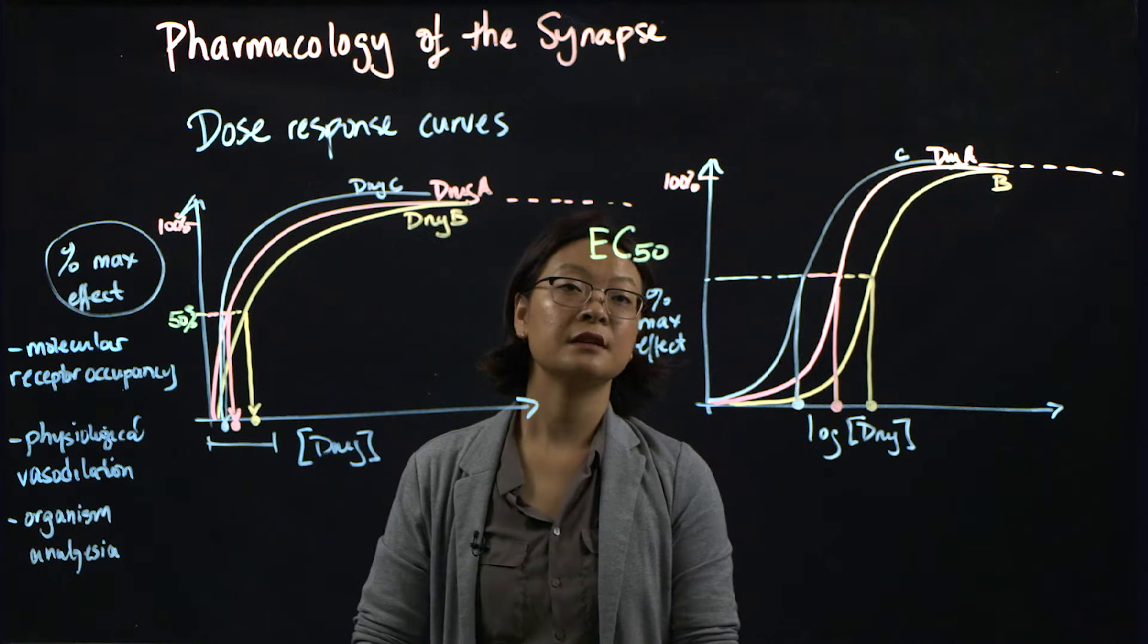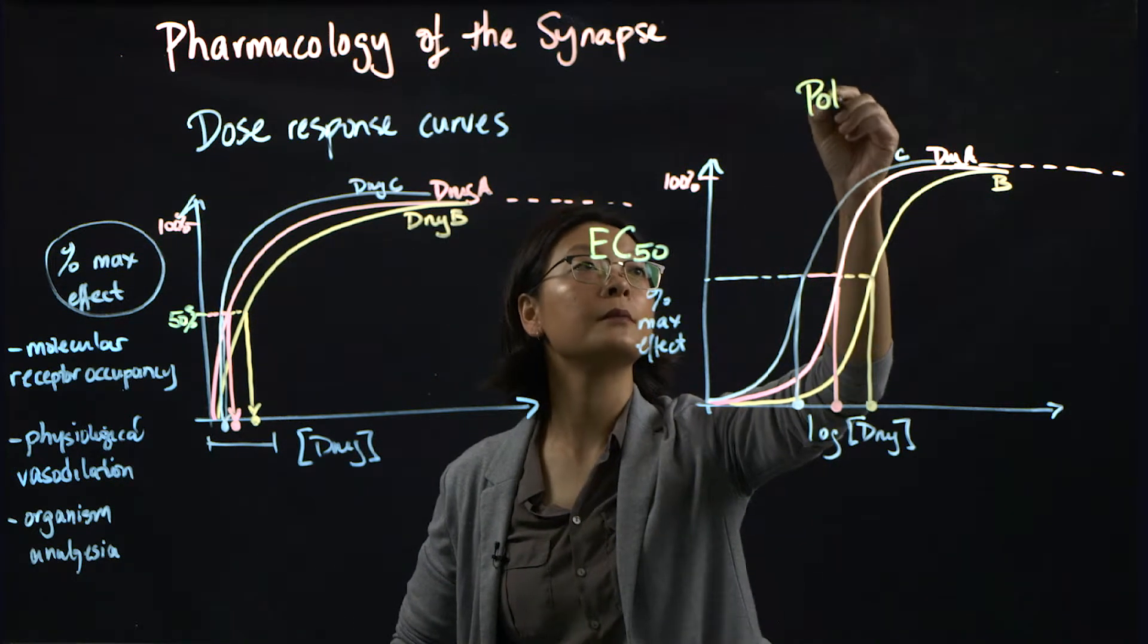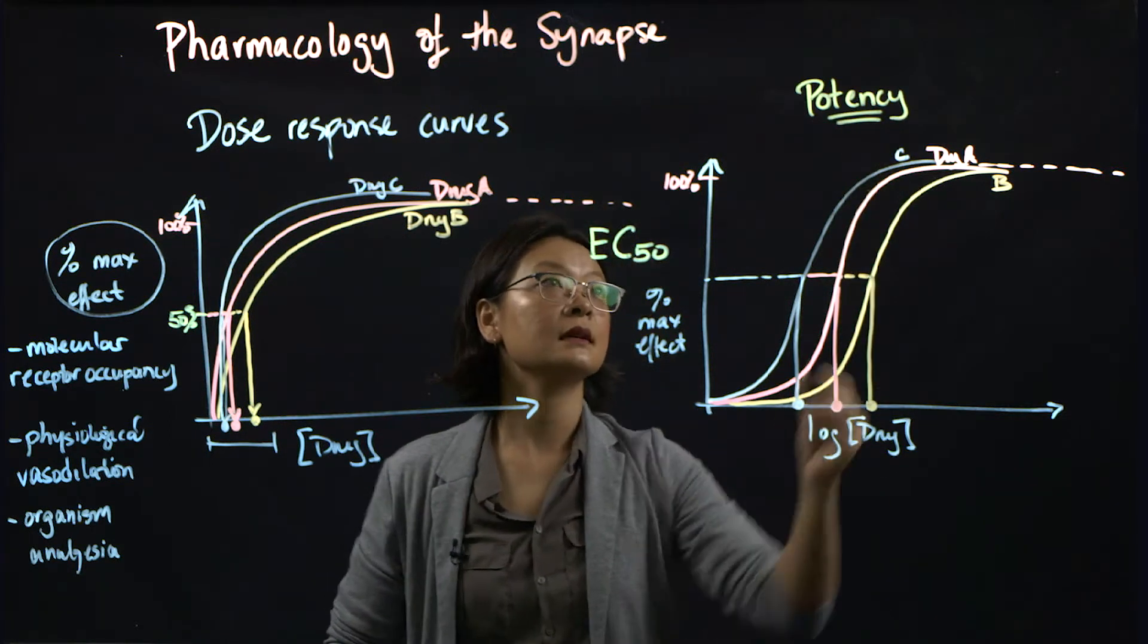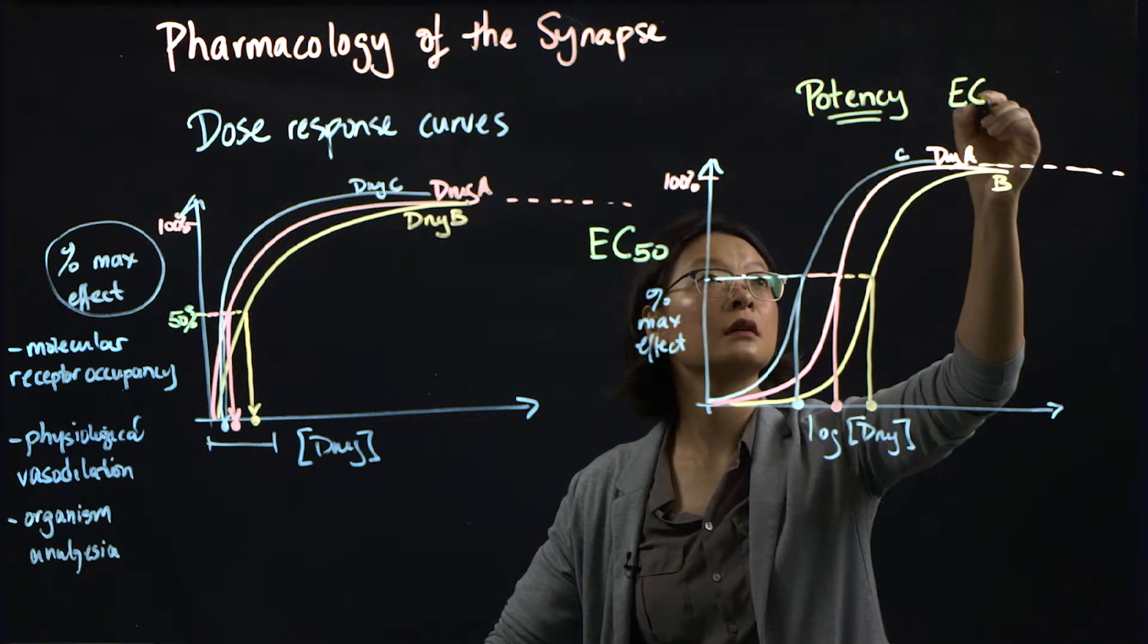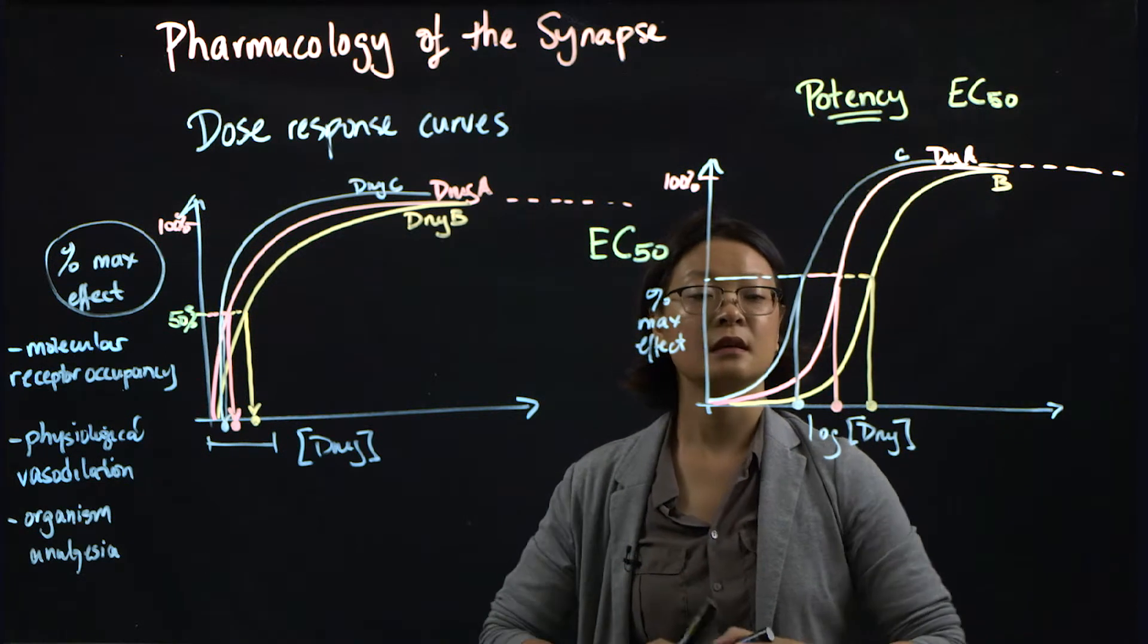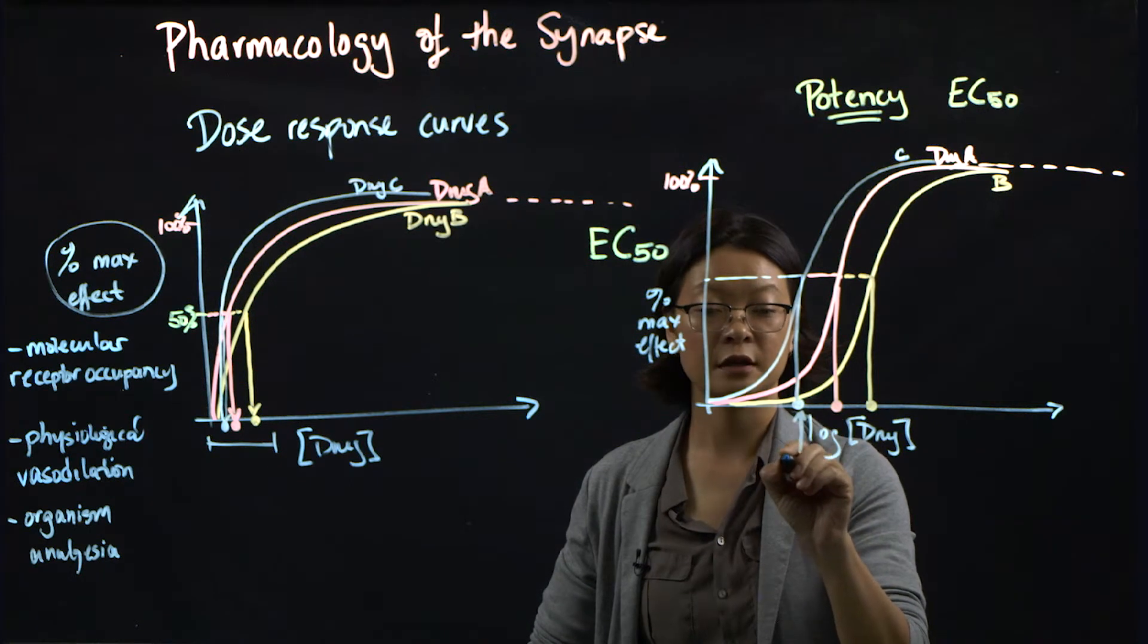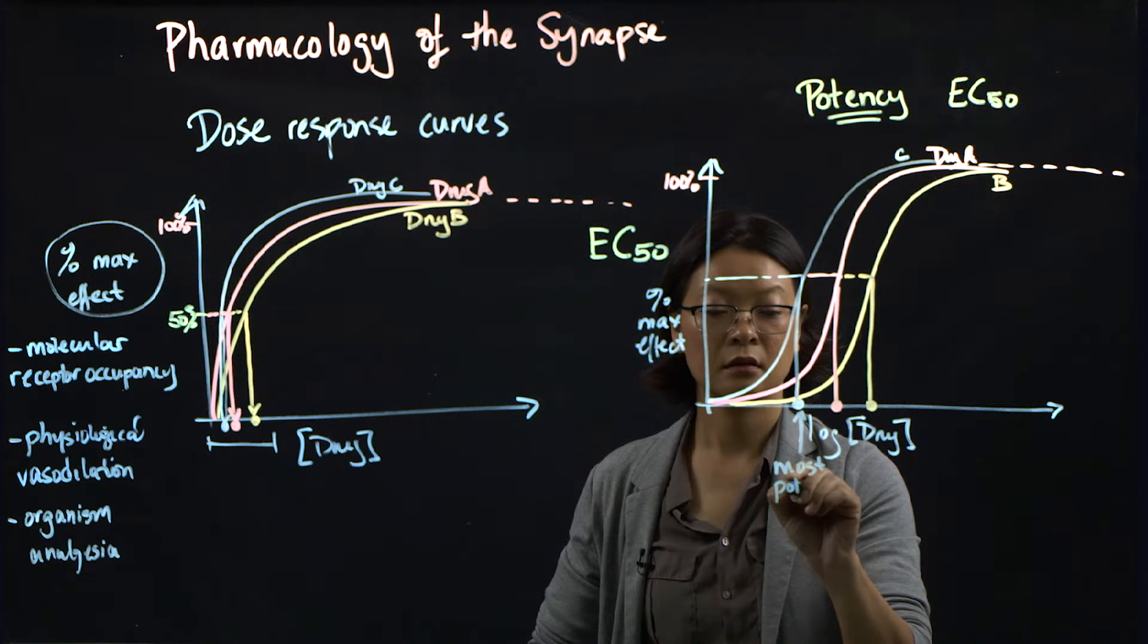Linked to the EC50 is the concept of potency. Potency is a measure of the effective concentration at 50 percent. So drug C here, which has the lowest EC50 concentration, is most potent.